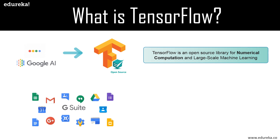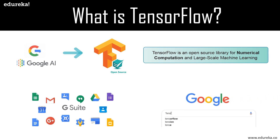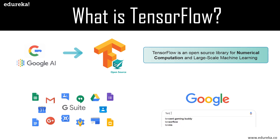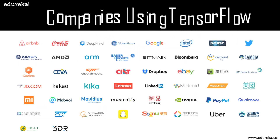Google uses machine learning in all of its products to improve the search engine, translation, image captioning, and recommendations. For a concrete example, Google users experience a faster and more refined search with artificial intelligence — when the user types a keyword in the search bar, Google provides a recommendation for what the next word could be.